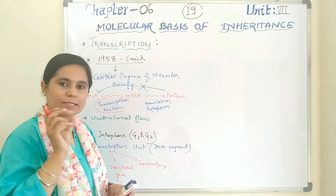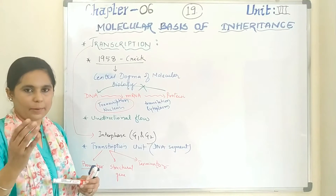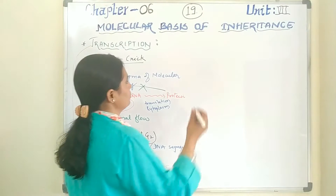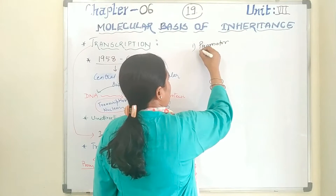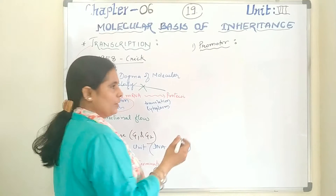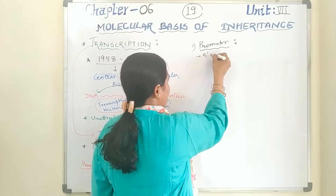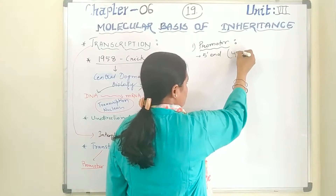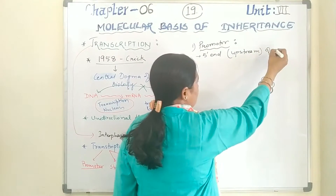The terminator region is that segment of the transcription unit where mRNA formation stops. Now the first part is the promoter. The promoter is a DNA segment present at the 5' end — it is upstream of the structural gene.